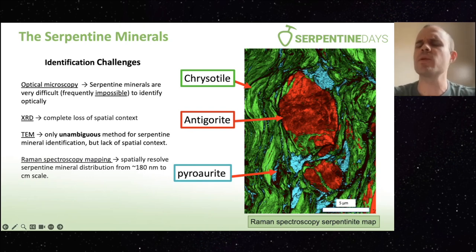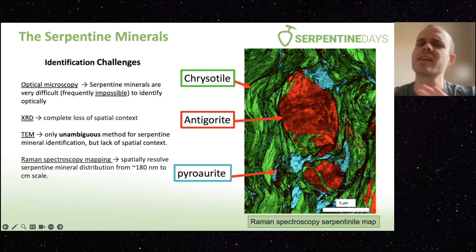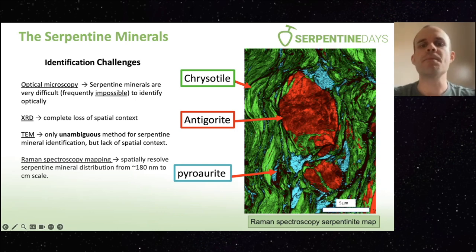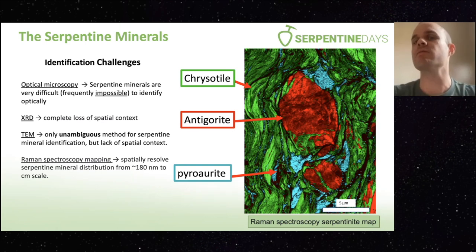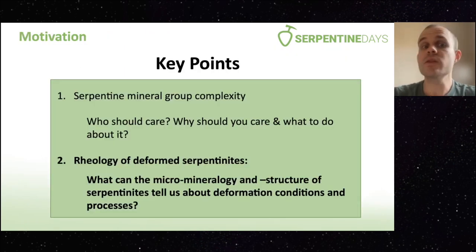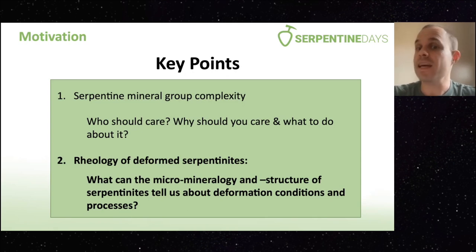This really gives us context when looking at microstructure and trying to relate it to physical processes of deformation. We have an example on the right where we have this beautiful antigorite grain that's breaking down, getting replaced by the surrounding chrysotile, as well as a bit of carbonation and hydration in the form of a pyroaurite. This is the kind of thing Raman spectroscopy can highlight and reveal that would be difficult to see otherwise. This brings us to my study of what this complexity can tell us about steady-state deformation behavior.